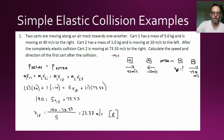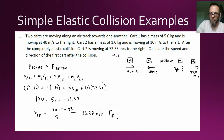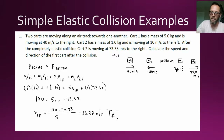Most of the momentum in this system was to the right because the speed and mass of cart one are so large. Cart two's final momentum is still way short of the total momentum of 190 kg·m/s to the right. So V1f is moving to the right at 23.33 meters per second.